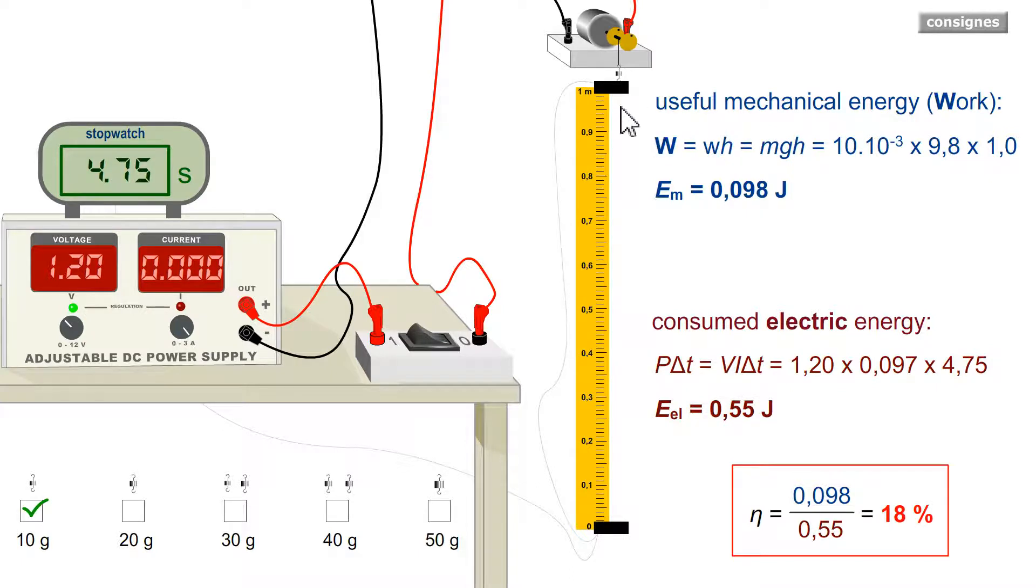So that's work. The energy of the motor equals the work done by the weight in absolute value. I calculate it and find 0.098 joule. The ratio of the two is here. That's 18%.